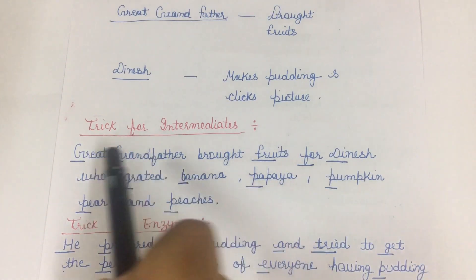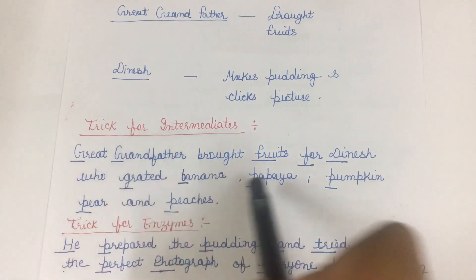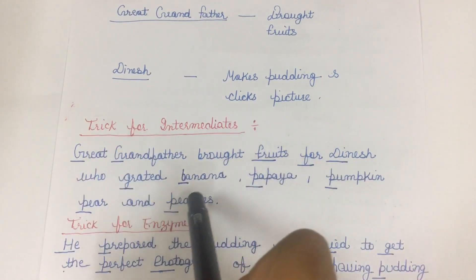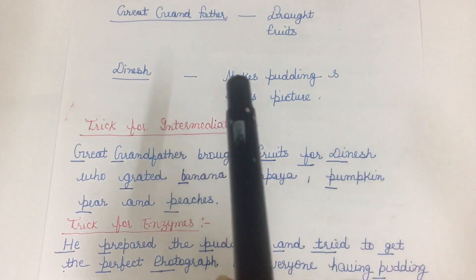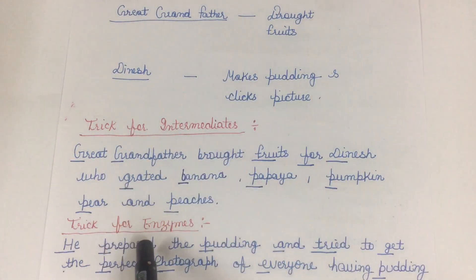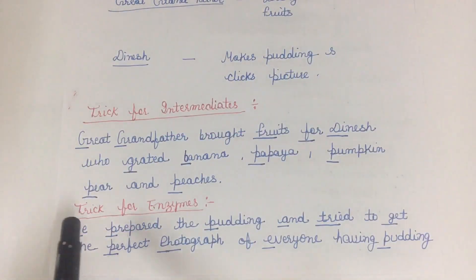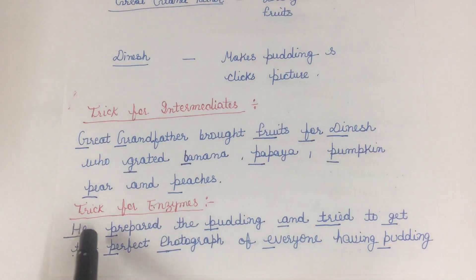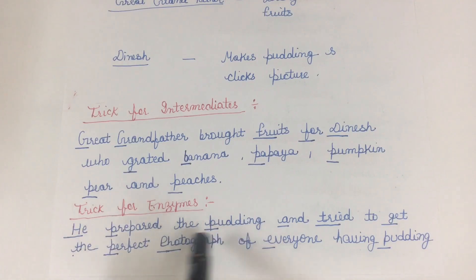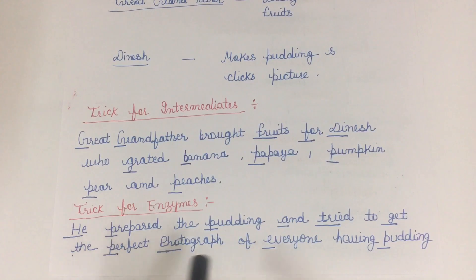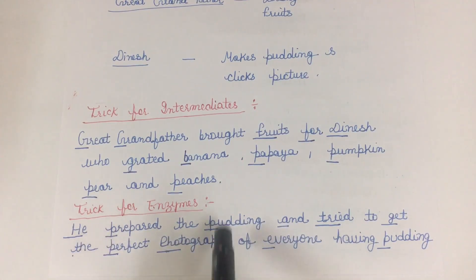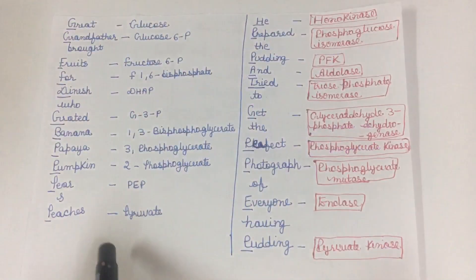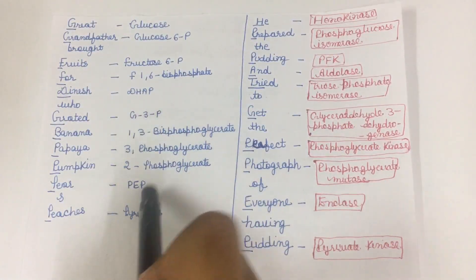I have underlined all the initials of words which represent the intermediates in glycolysis. The trick for remembering enzymes is: 'He — Dinesh — prepared the pudding and tried to get the perfect photograph of everyone having pudding.' Here also the underlined initials refer to the names of the enzymes. You can see the intermediates of glycolysis, and the ones written in red are the enzymes.